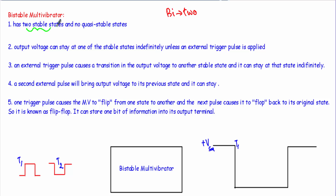The output has two stable states. The output of this bistable multivibrator will have two states: either plus Vsat or minus Vsat. If we get the output voltage at plus Vsat, the output voltage of the bistable multivibrator will retain this plus Vsat at its output terminal for an indefinite time period. The output voltage can stay at any of the stable states — either plus Vsat or minus Vsat — indefinitely, unless we apply an external triggering pulse.